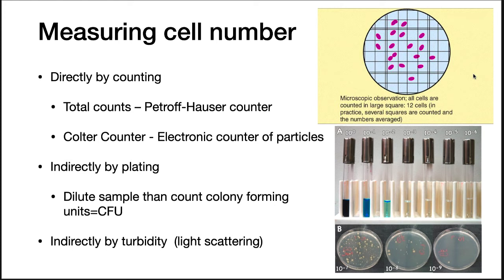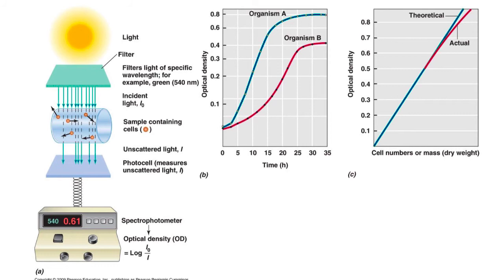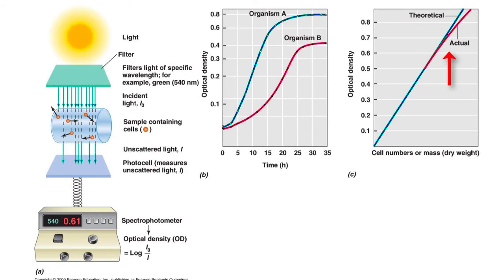However, your plate count is of only viable cells, which is what you want after all. Turbidity relies on the fact that particles, including cells, scatter light. To measure turbidity, a filtered light passes through the sample. The optical density is a ratio of the log of the incident light versus the unscattered light. The more light scattering, the higher the measured turbidity and the higher the concentration of cells. OD is normally measured around 600 nanometers because that is the low point for absorption by cellular components. This method is simple, rapid, and accurate. However, it cannot differentiate between living and dead cells, and if the turbidity gets too high, it no longer correlates with cell number.